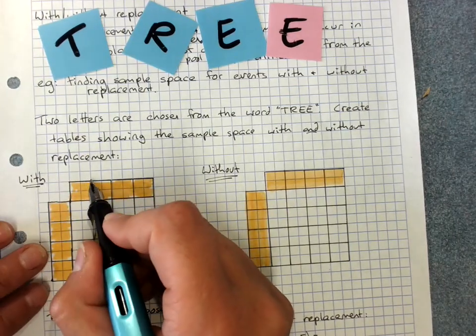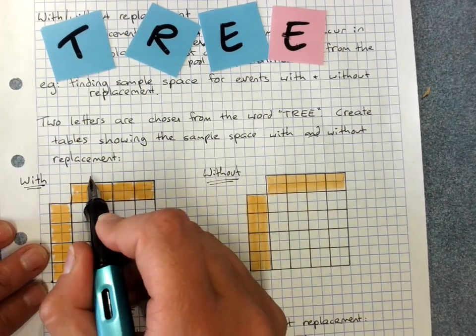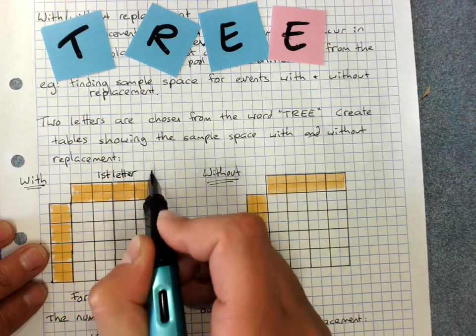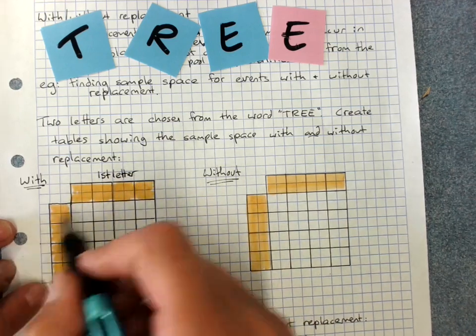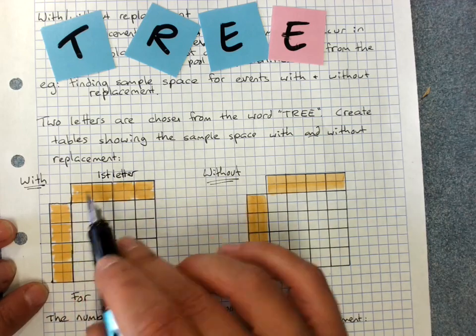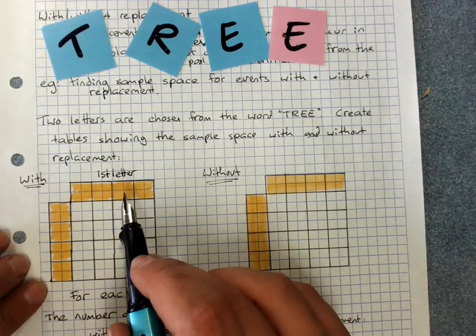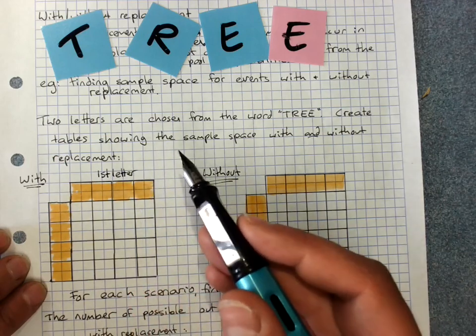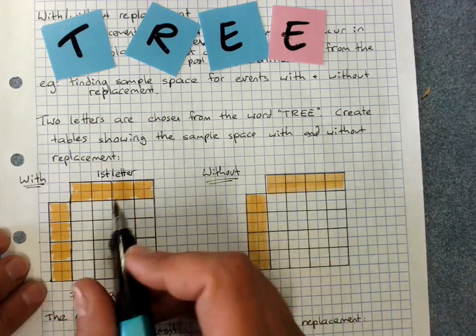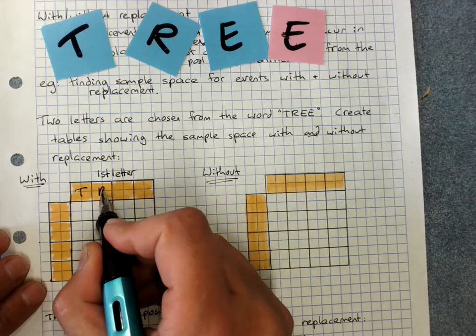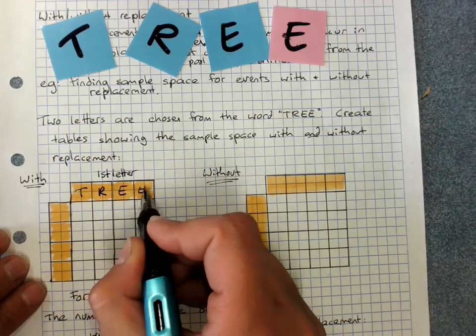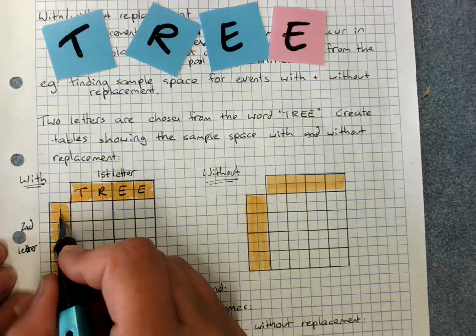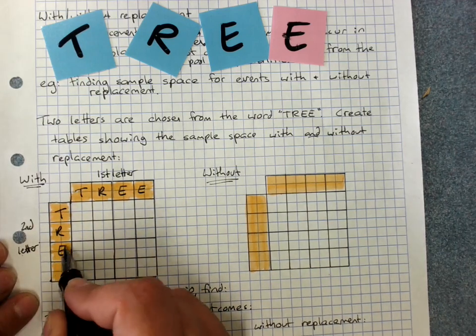With replacement is the easier one. Our first letter generally goes up the top. It wouldn't matter if it was first and then second, but once you've chosen, the order matters because T, R is a different outcome to R, T. My different outcomes that are possible are T, R, E, E. And then my second letter will go down here and my different outcomes are T, R, E, E.